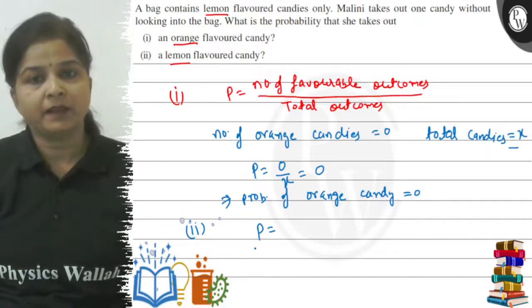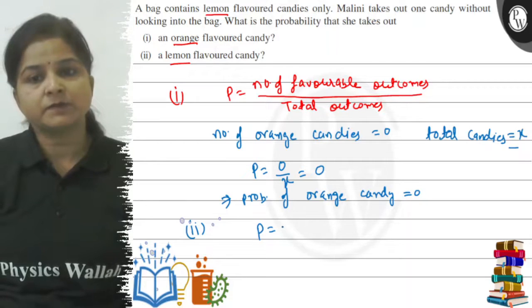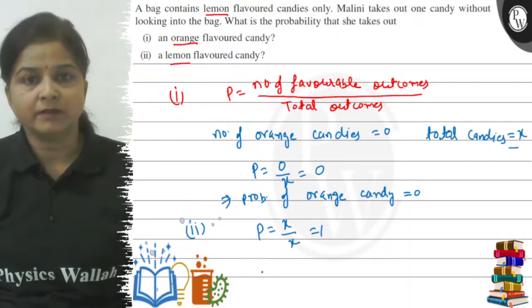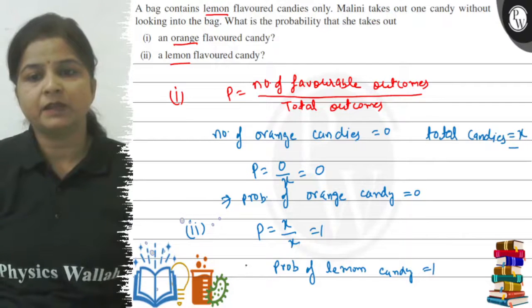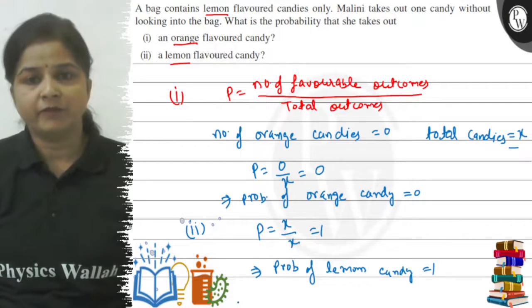Now if we apply our formula, the favorable outcomes will be X and the total outcomes will be X. So what is the probability? X over X equals 1. This means probability of lemon candy is 1.